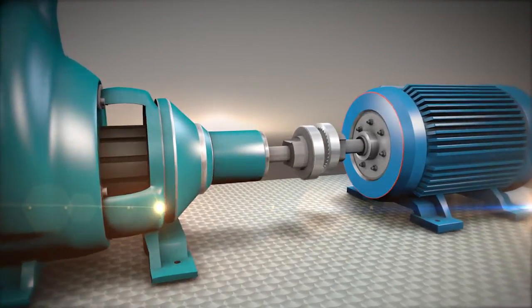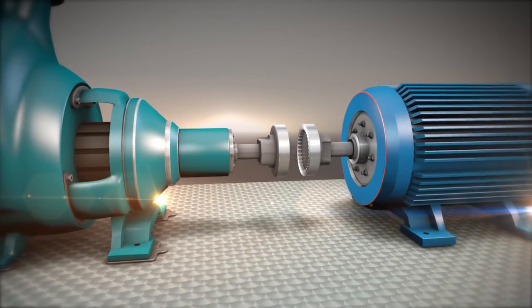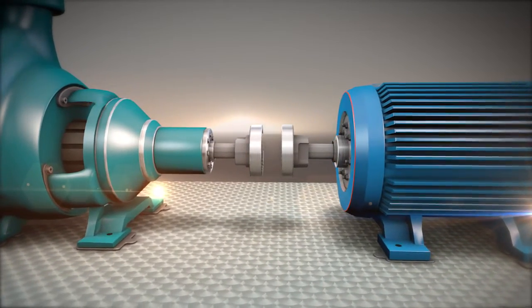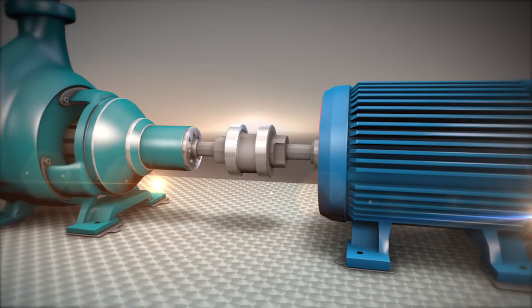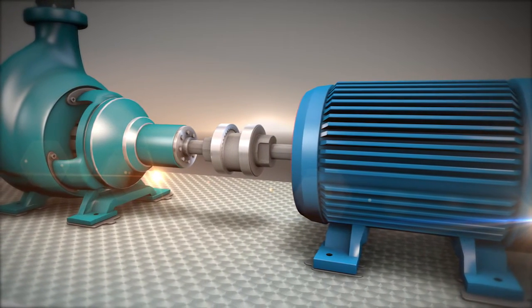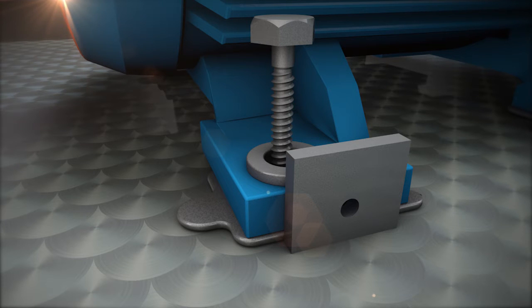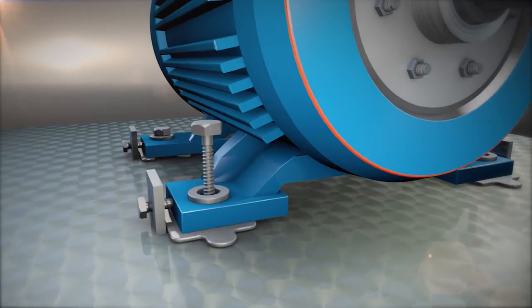With the base plate in place, the rotating equipment should be centered horizontally upon it and an equal amount of shims placed under each foot while keeping the required axial gap. Installing jack bolts is also recommended to facilitate horizontal movement of the machines.